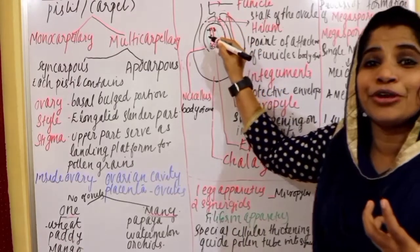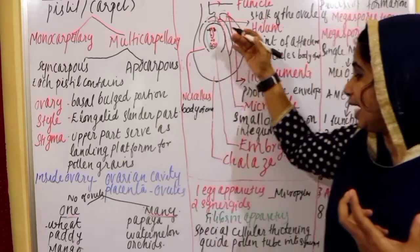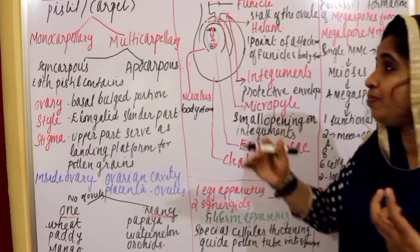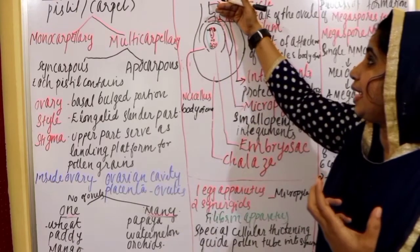Inside the nucellus, there is a single embryo sac. The portion of the ovule opposite to the micropylar end is the chalazal end.